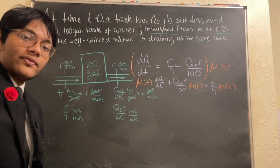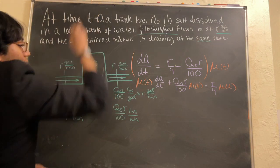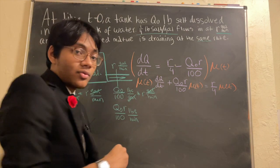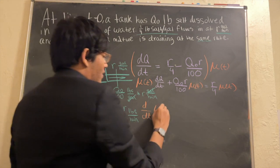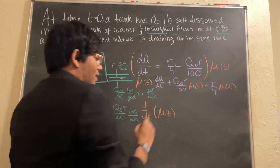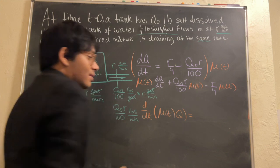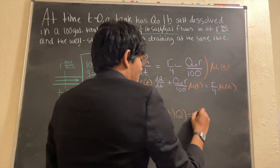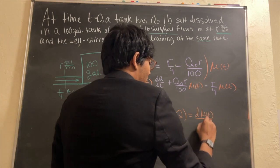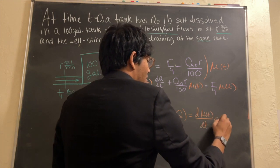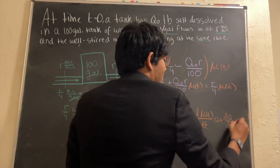And so now, if you look at this, you should recognize that this is no less or no more than the product rule. Recall that if I have the derivative of some integrating factor mu of t times q, the product rule tells us this should be the derivative of mu with respect to t times q plus the derivative of q with respect to t times mu.